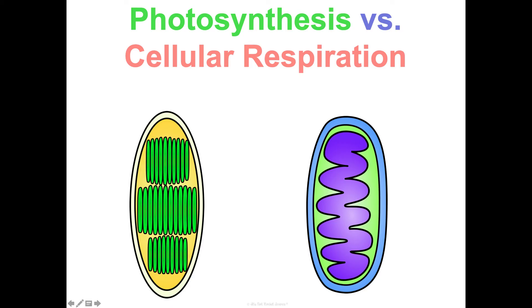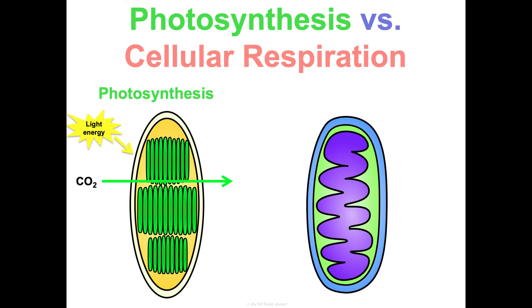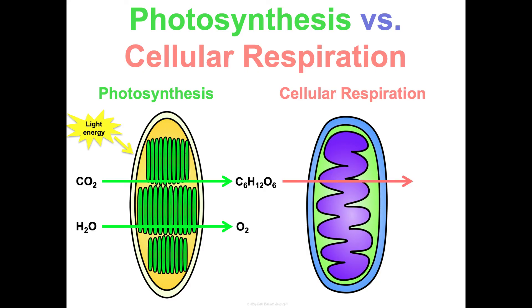For one last visual summary: photosynthesis uses the chloroplast — it absorbs light energy and CO2, uses CO2 to make glucose, and uses water to make oxygen. Cellular respiration uses the mitochondria — it breaks glucose down into carbon dioxide, uses oxygen and makes water, and releases energy in the form of ATP for the cell to use. It's a beautiful circle of life, and that is cellular respiration.